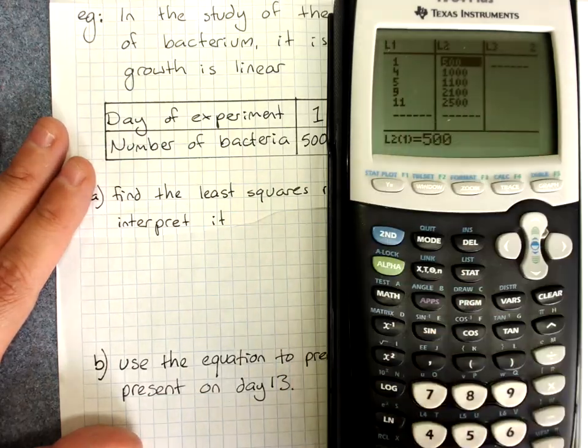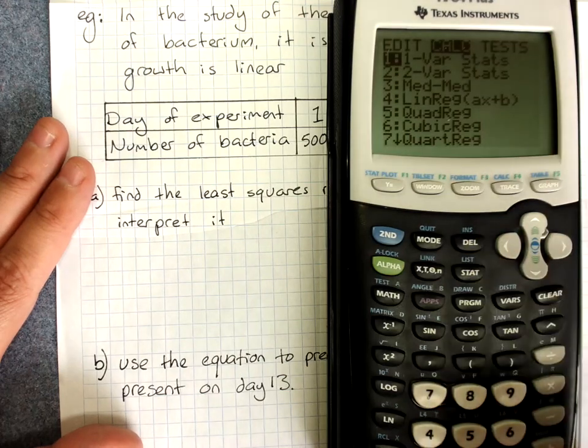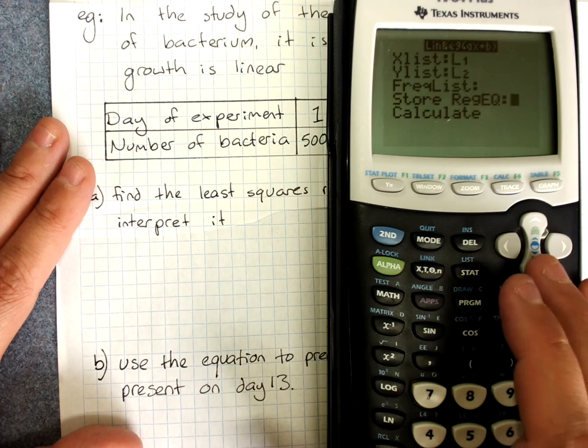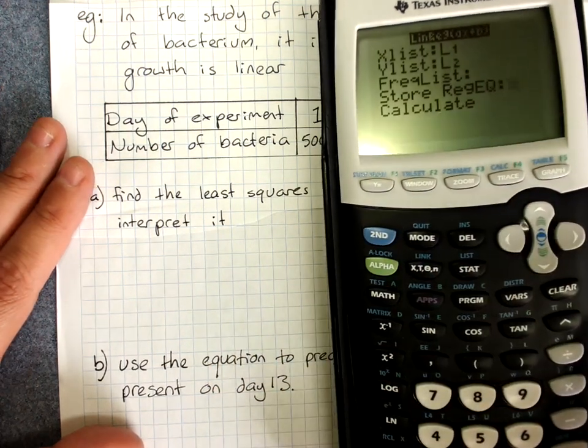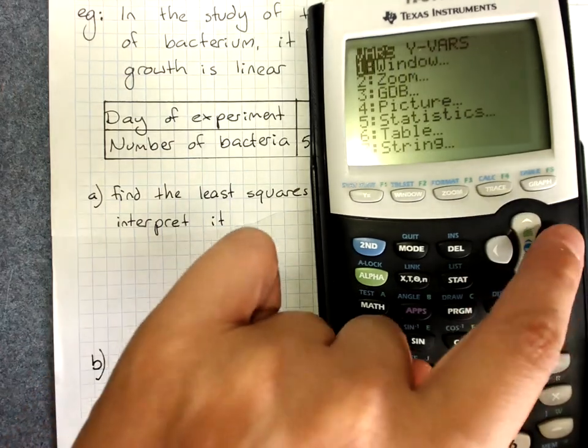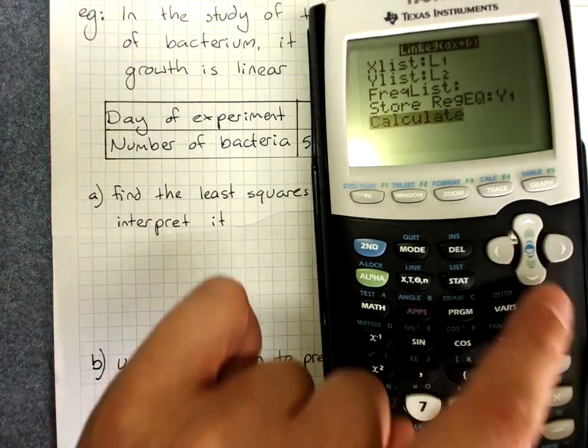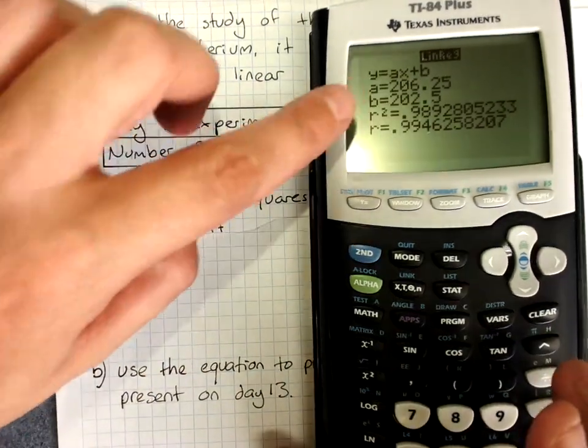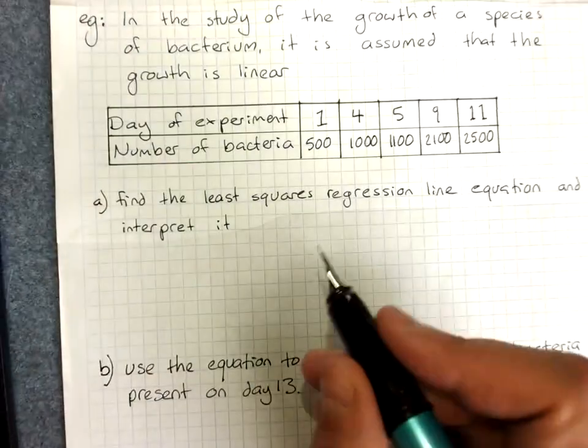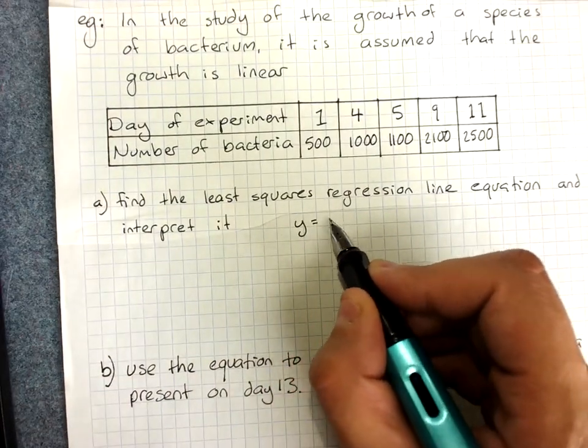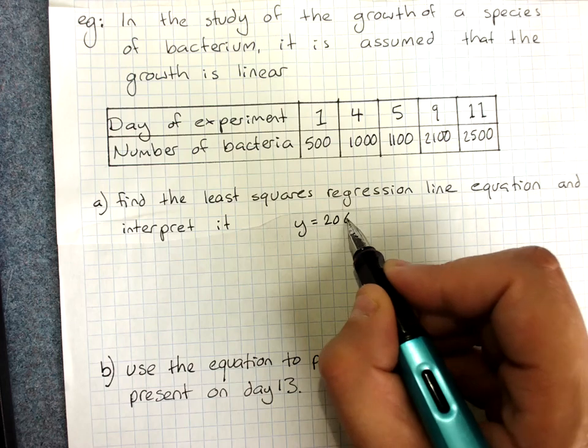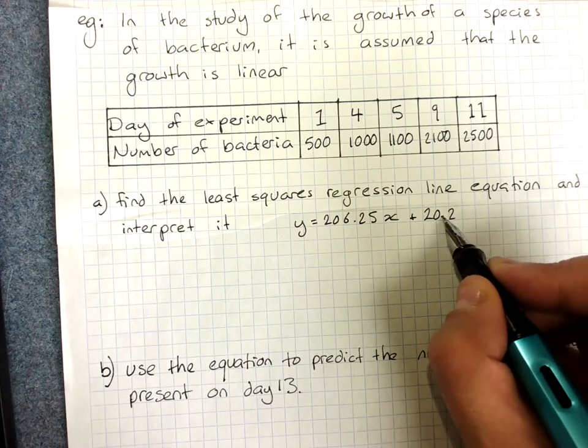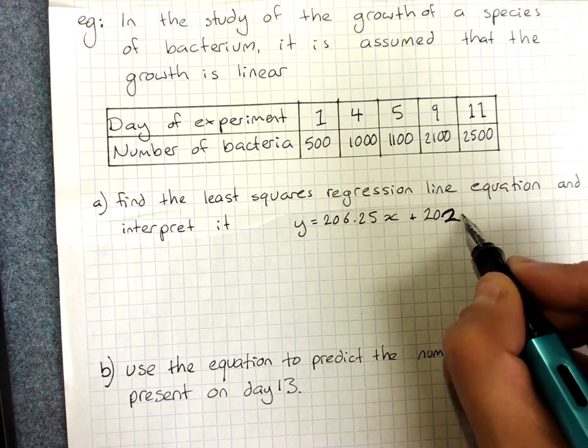I've got my data in. Stat, calc, linreg. Remember, we might as well get in the habit of putting in the y variables, so that it stores our line in y1. Calculate. And I've got y equals ax plus b. Y equals 206.25x plus 202.5.